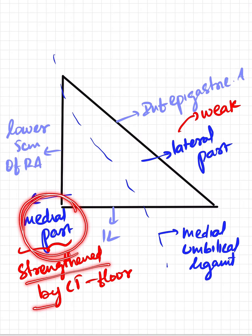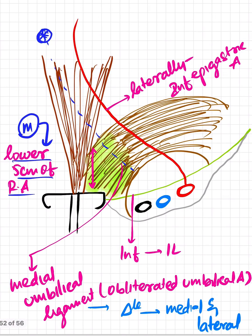This medial part is actually strengthened by the conjoint tendon present at its floor. If you see here, in the floor it also has the conjoint tendon, so this strengthens the medial part. The lateral part doesn't have any conjoint tendon.